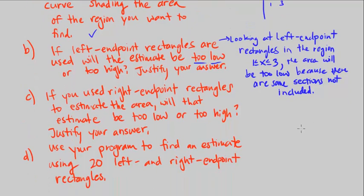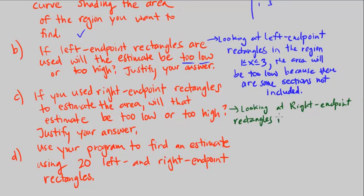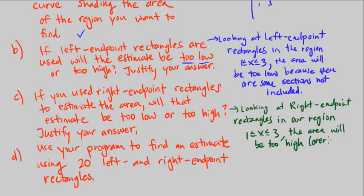So if I used right endpoint rectangles, if I draw them in, I'm able to see looking at right endpoint rectangles in the region, in our region 1 to 3, the area will be an overestimate. Overestimate means too high, will be too high, overestimate.